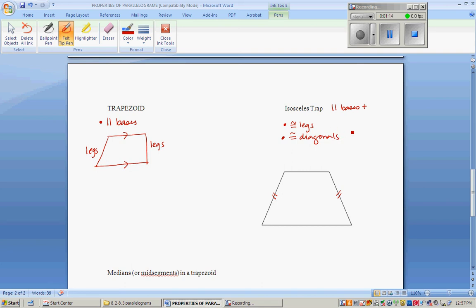The one other thing that it has is because of the congruent legs, which are the definition of an isosceles trapezoid, because the legs are congruent, the base angles will be congruent as well, just like in an isosceles triangle.